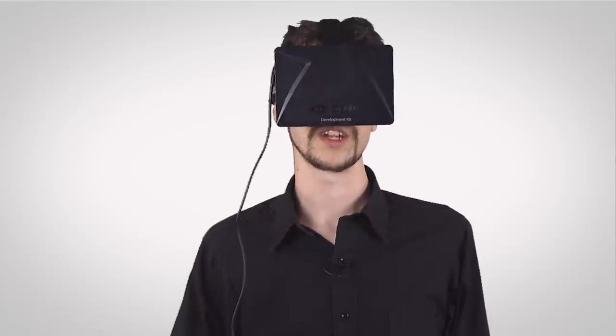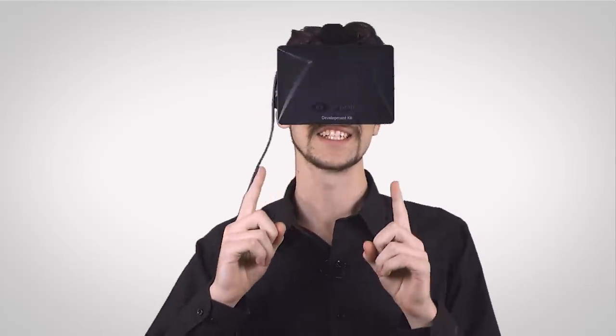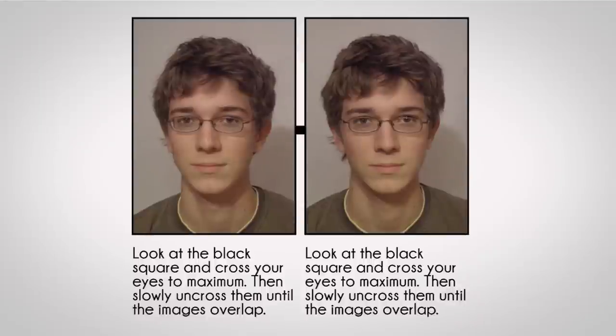Oculus Rift also works this way, with each eye seeing a slightly different image. But you don't even need a special device to make this work. You can just place the two images side by side, like this hilarious picture of beardless Teran from 2006. All you need to do is cross your eyes to match up the images. This is very similar to how magic eye images work.